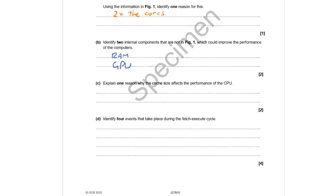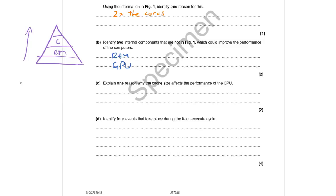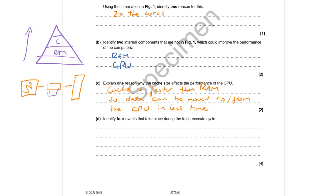We need to explain one reason why cache size affects CPU performance. Think of memory as a hierarchy — a pyramid. At the top you have registers, then cache, then RAM, then secondary storage. As you go up, speed increases but size decreases. Cache sits on or very close to the CPU and is much faster than RAM, so data can be moved to and from the processor faster. As cache size increases, more instructions can be held there, benefiting from that increased speed.